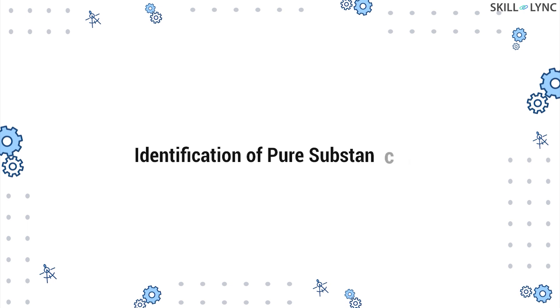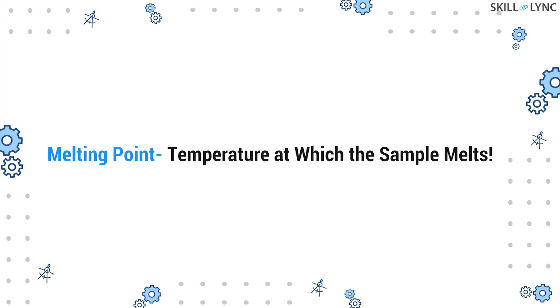Since temperature is an intensive quantity, the melting point is used by chemists for the identification of pure substances. The melting point is the temperature at which a sample melts and it has no dependence on the mass of the sample used.